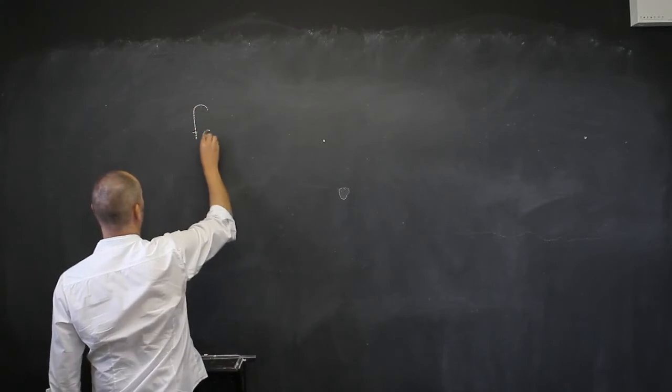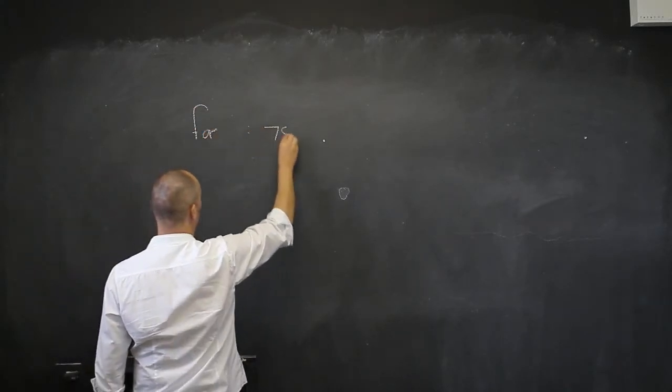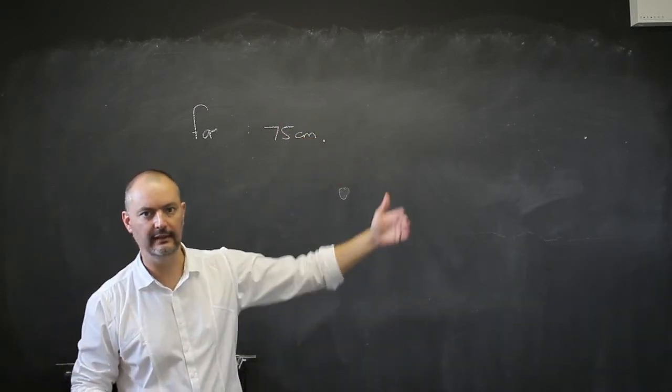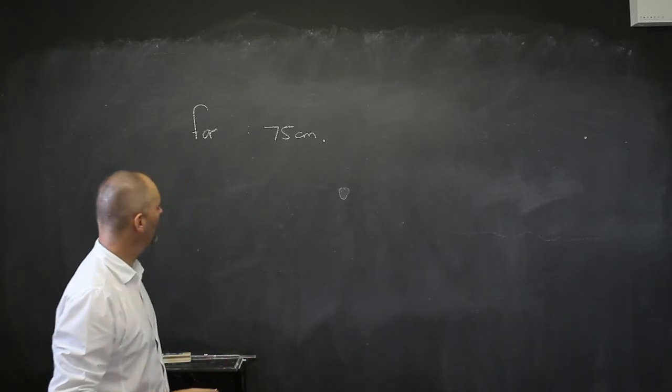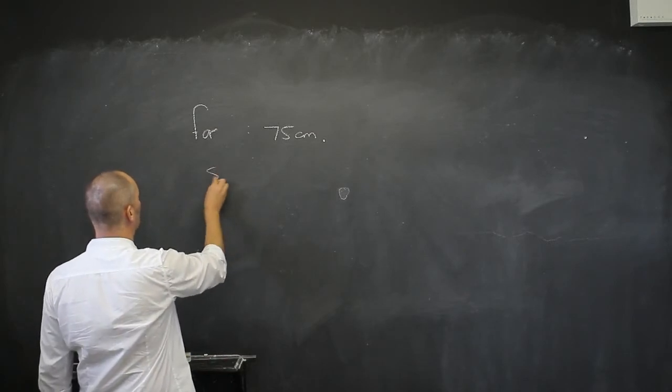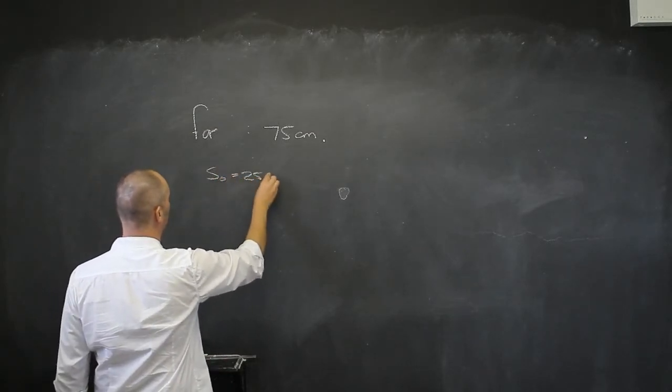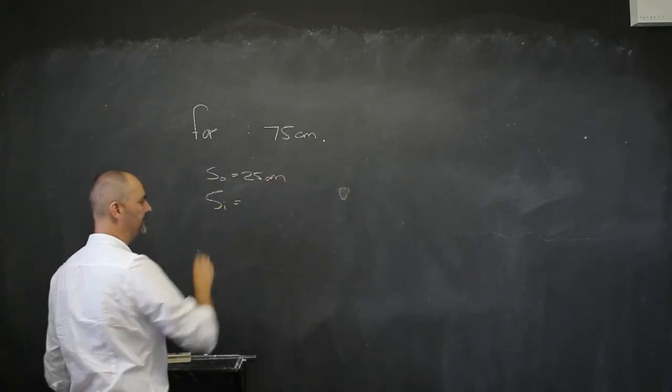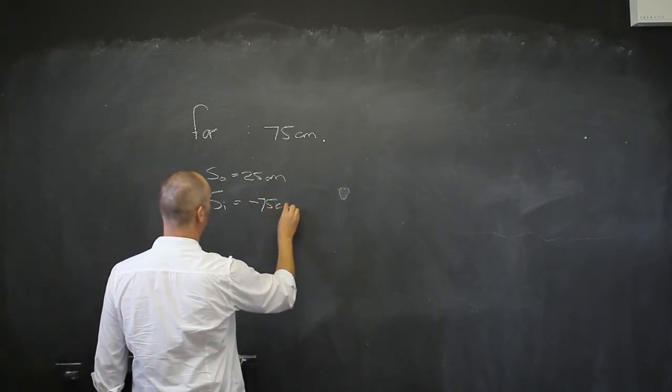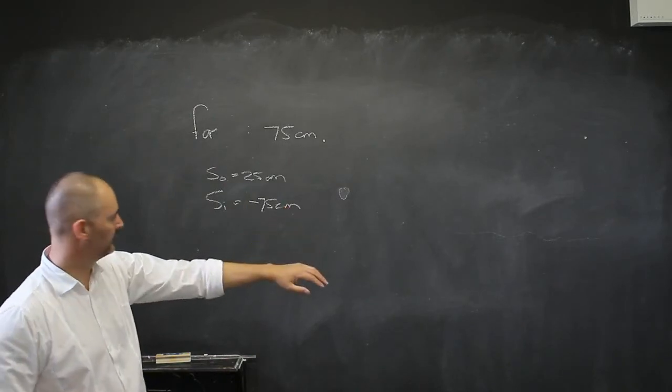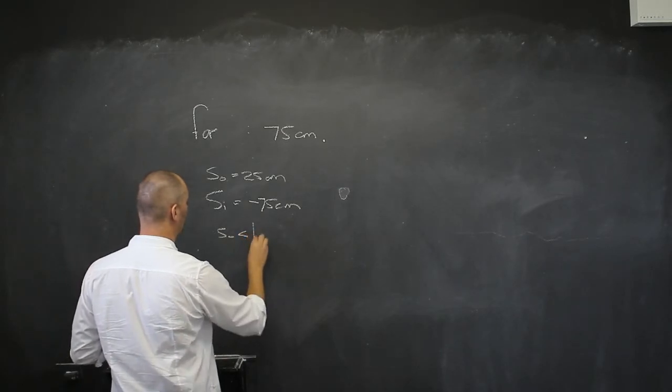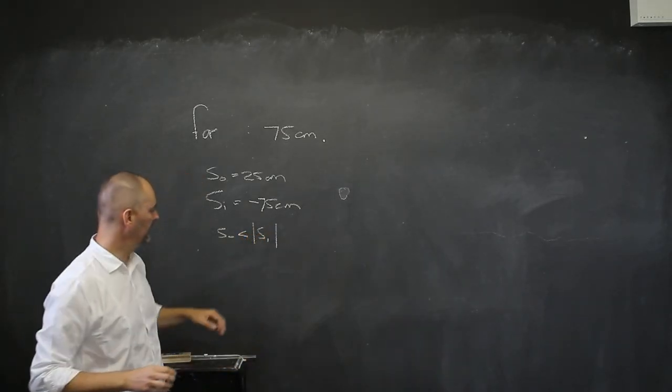Now we're going to have a far-sighted person. And say for instance, they can only foresee things from 75 centimeters and onwards. They're far-sighted, they can see far. Now I place something at 25 centimeters, which is now at the near point, and that will not be in focus for this person. So I place my object at 25 centimeters, but I need to form an image for him which is virtual and upright. Same story, it's got to be in front of you, of at least negative 75 centimeters. Because from that point on he can focus. So what we have now is that S0 is smaller than the absolute value of SI.